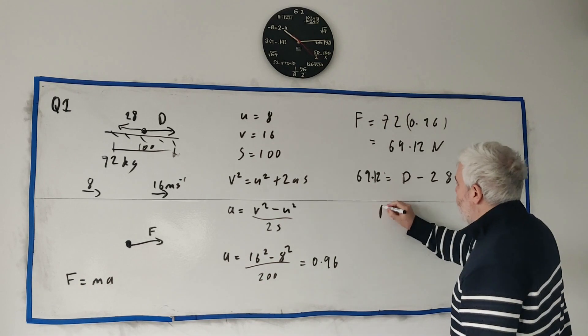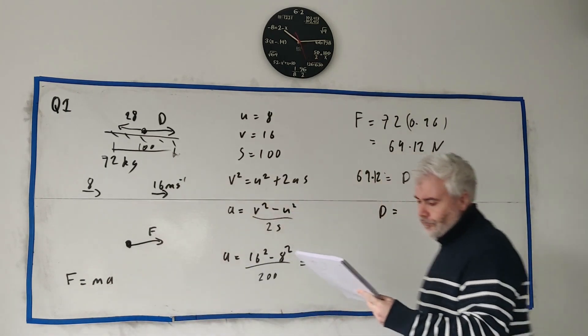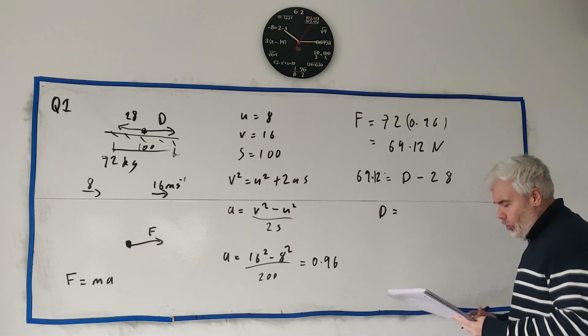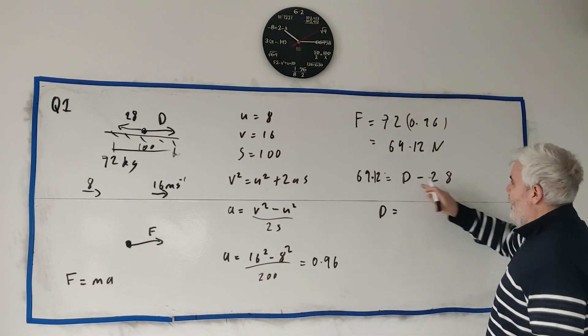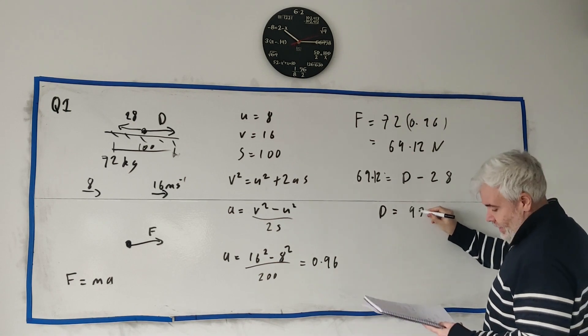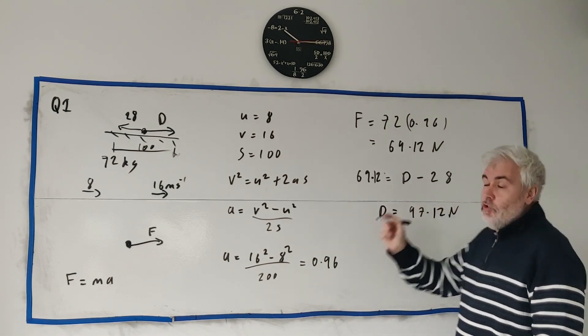These forces combined must equal that. Just add 28 to both sides. We get D is equal to, had to do a quick edit there. I have the wrong number down here. I had D is equal to 77, but that couldn't work out. So it's 97.12 newtons. That's the driving force.